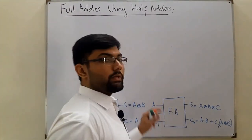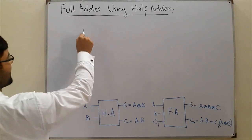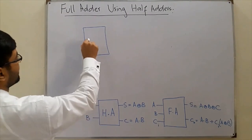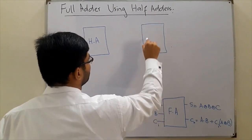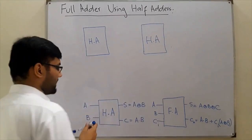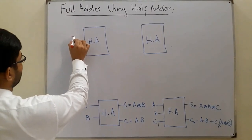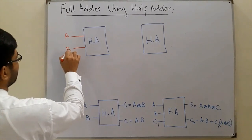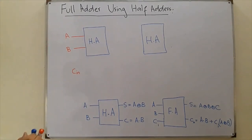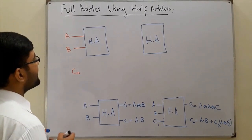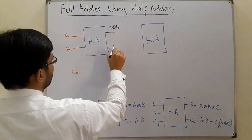Today we design this full adder with the help of half adders — we require two half adders. The first half adder takes inputs A and B, which results in a sum equal to A XOR B, and a carry output of A AND B.